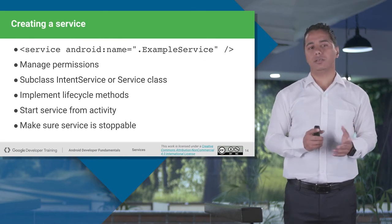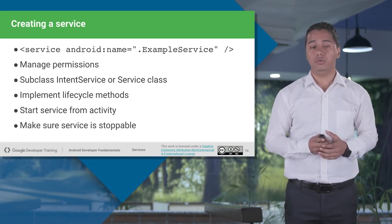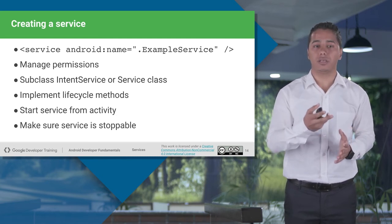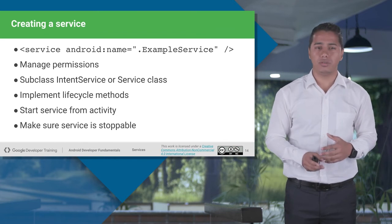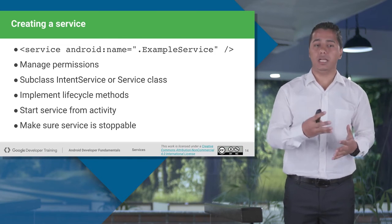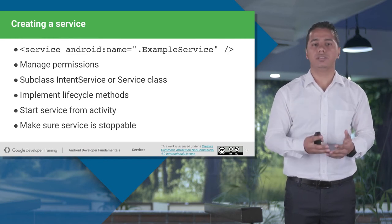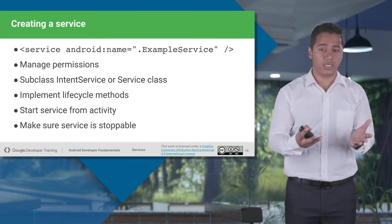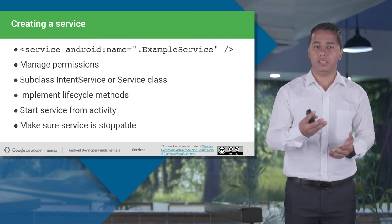How do you create a service? As service is a fundamental component, you need to declare it in your manifest file with the service tag and give the service name. You can also provide permissions for who can use your services. Then you create a class extending either the Service class or IntentService. Implement the lifecycle methods and start the service from your main activity — using startService for a started service or bindService for a bound service.